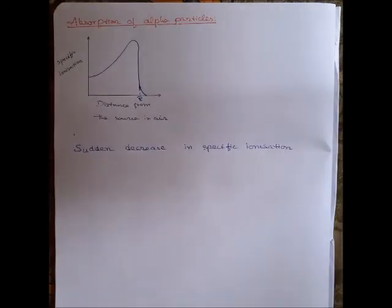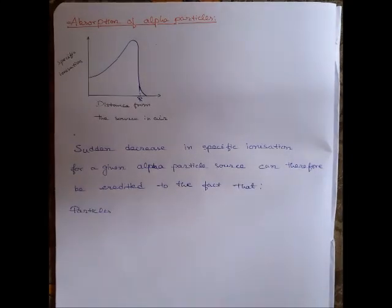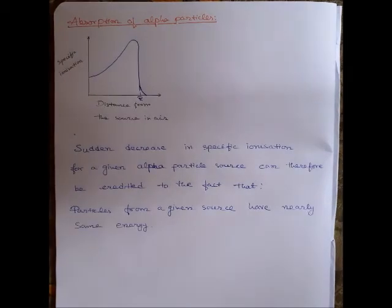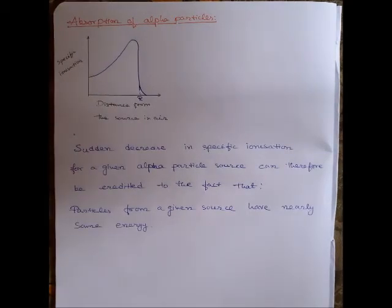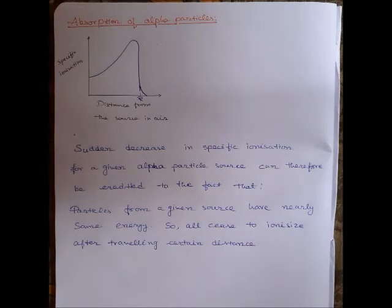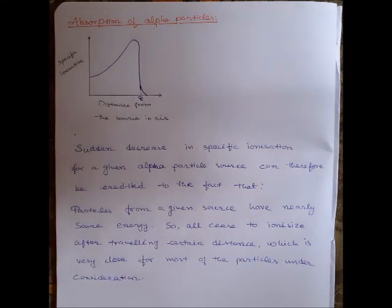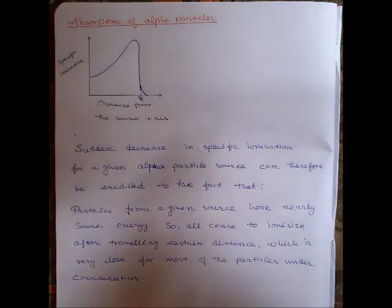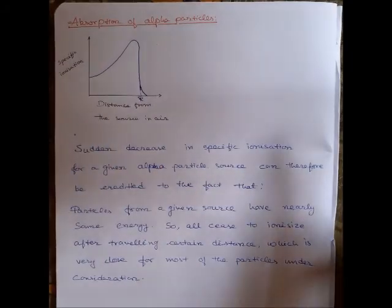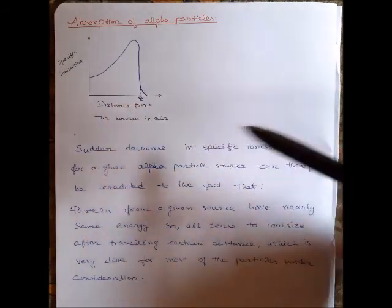The sudden decrease in specific ionization for a given alpha particle source can be credited to the fact that particles from a given source have nearly the same energy. That is why they all cease to ionize after traveling a certain distance, which is very close for most of the particles under consideration. Beyond this point, the alpha particles practically cease to produce ionization.